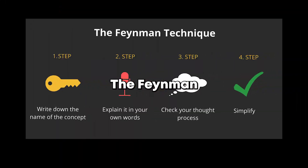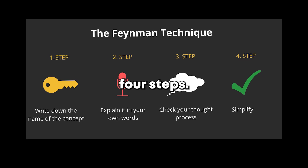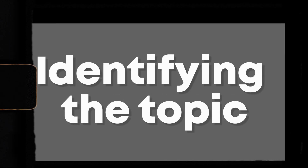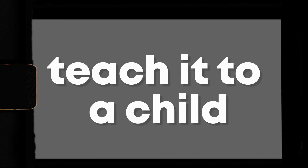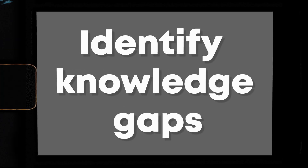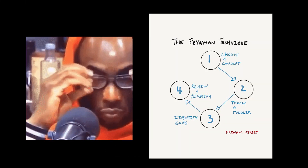The Feynman technique consists of four steps: the first step is identifying the topic, the second step is teaching it to a child, the third step is identifying knowledge gaps, and the fourth step is to simplify. We will look at each of these steps in turn.